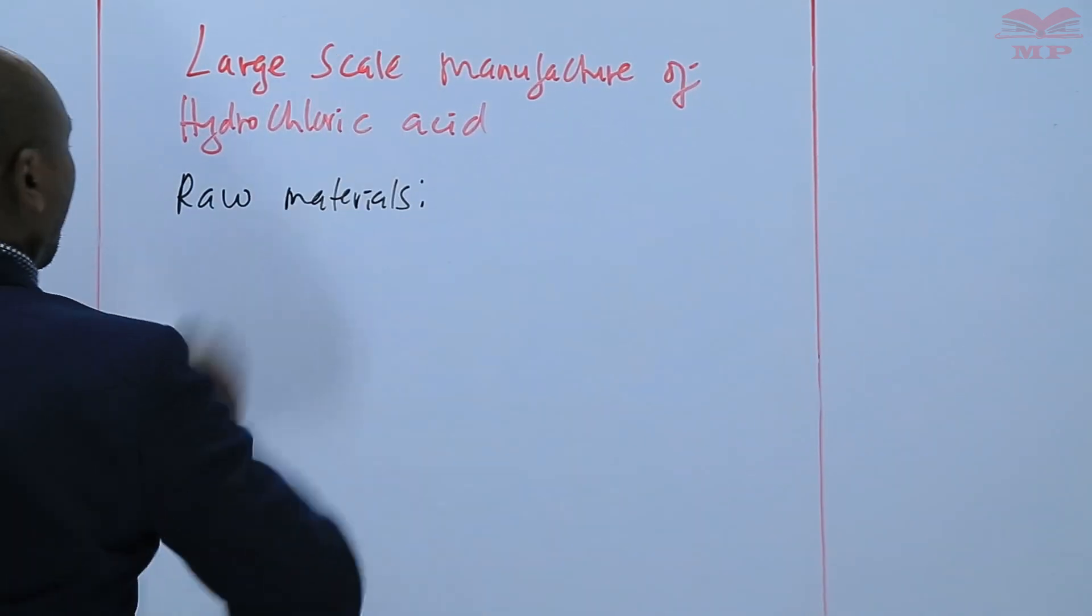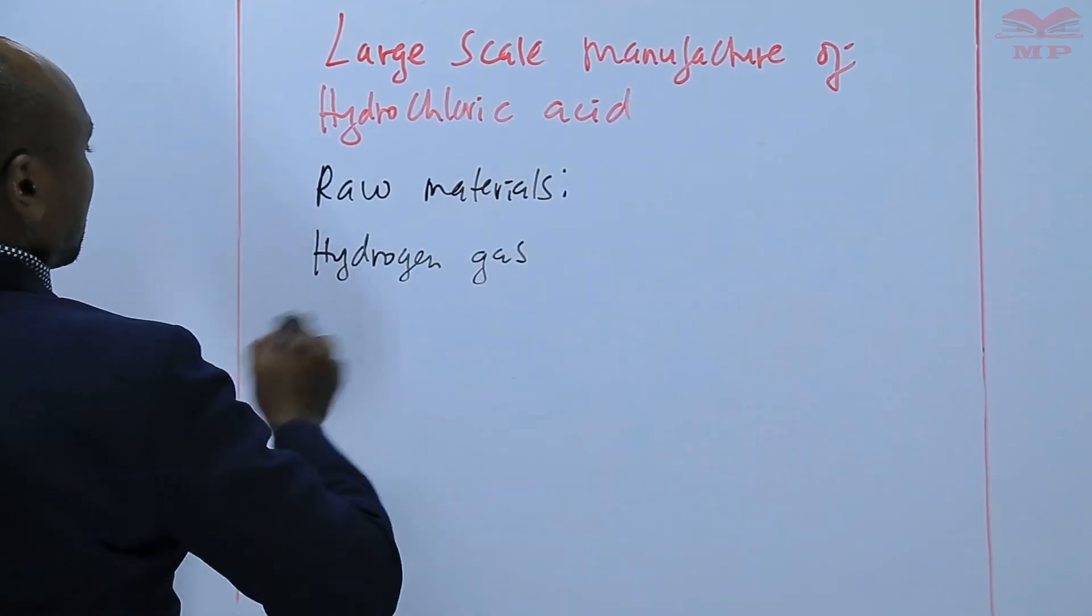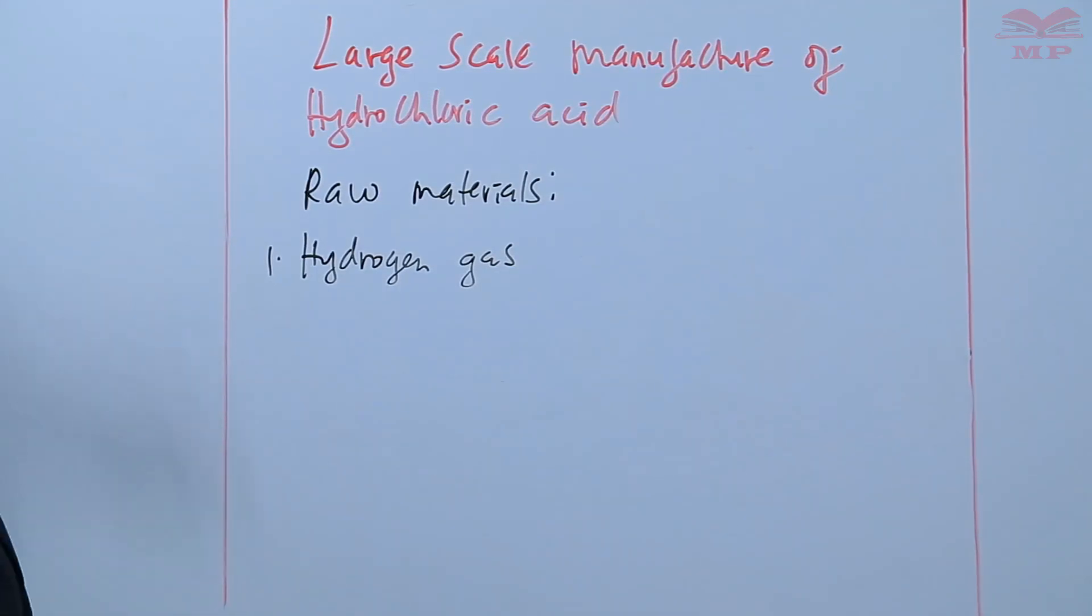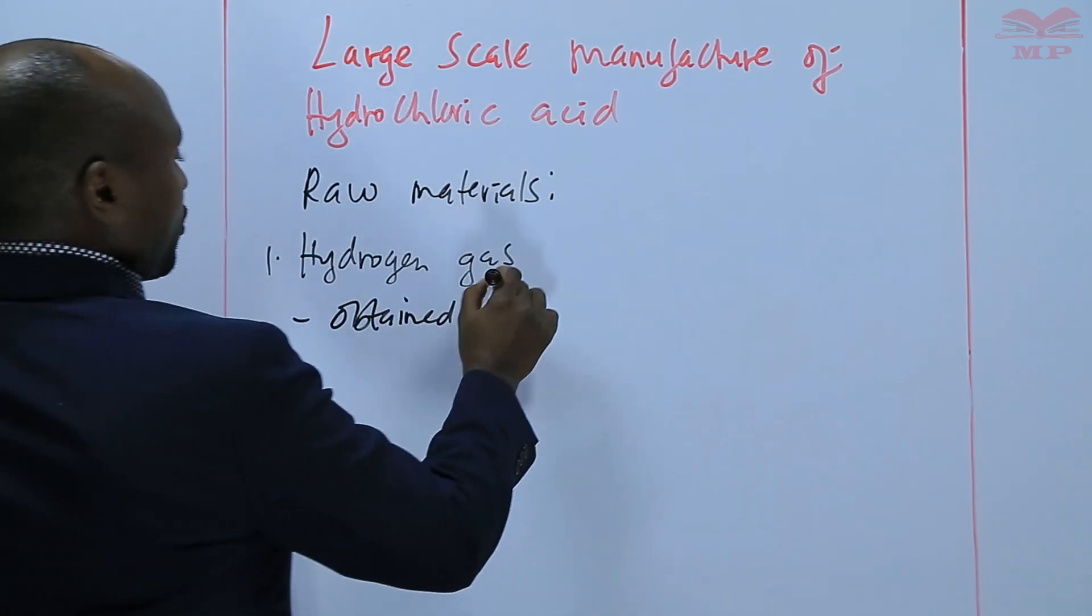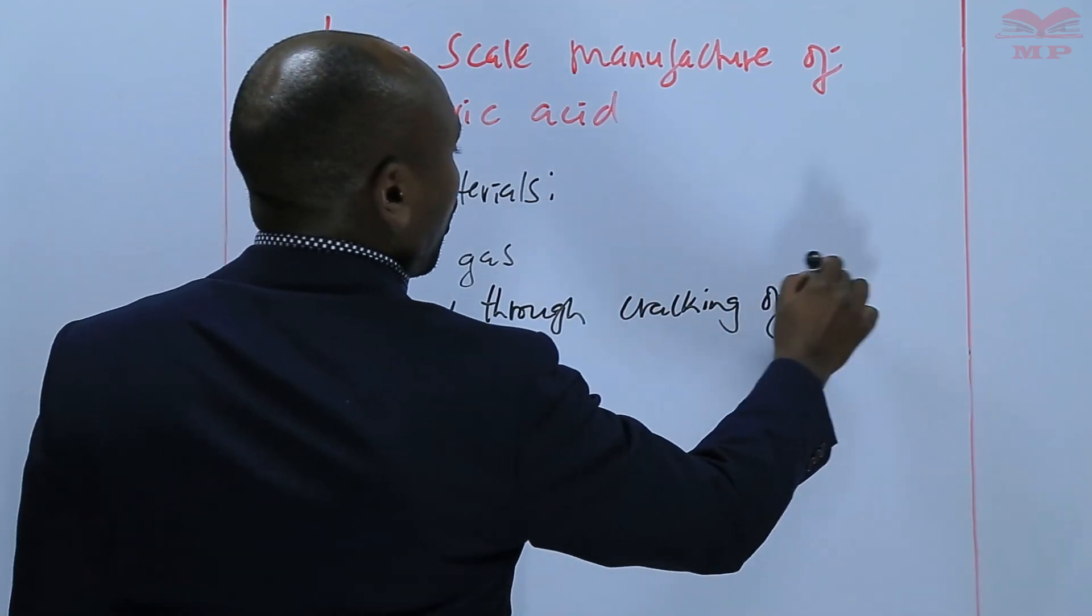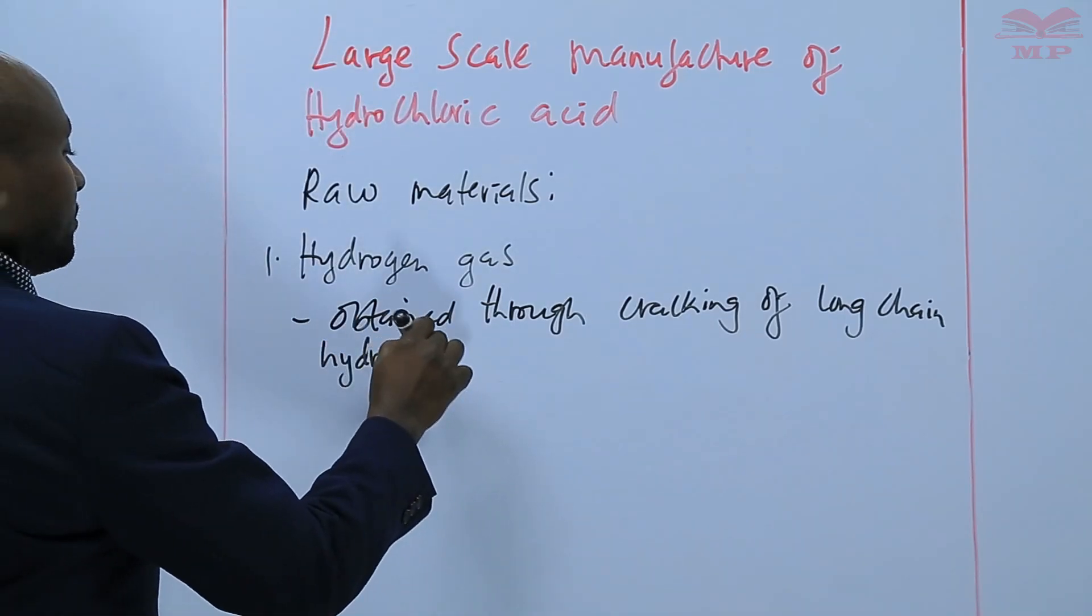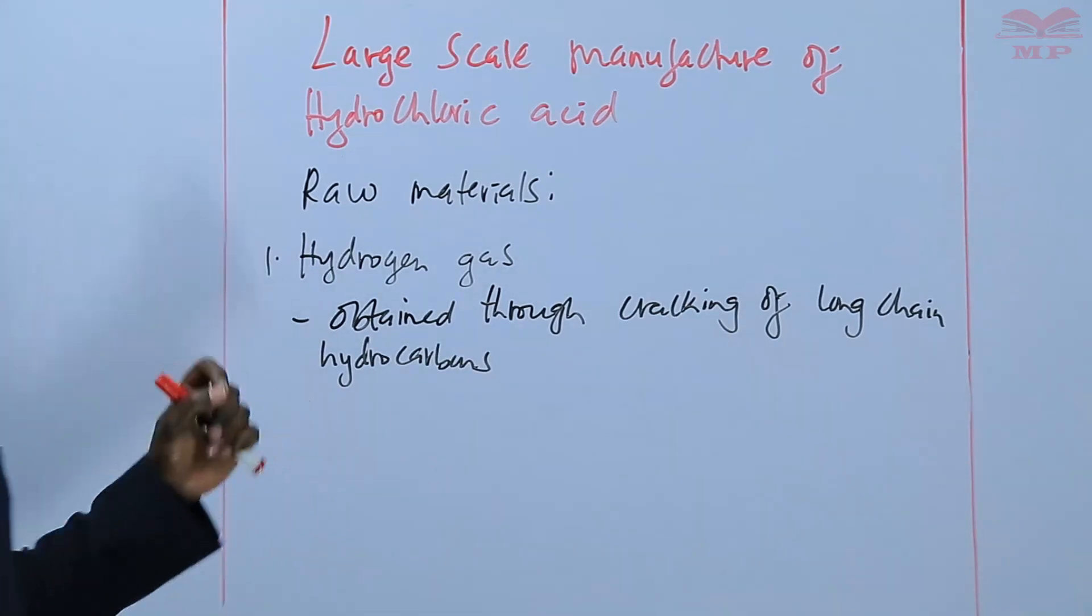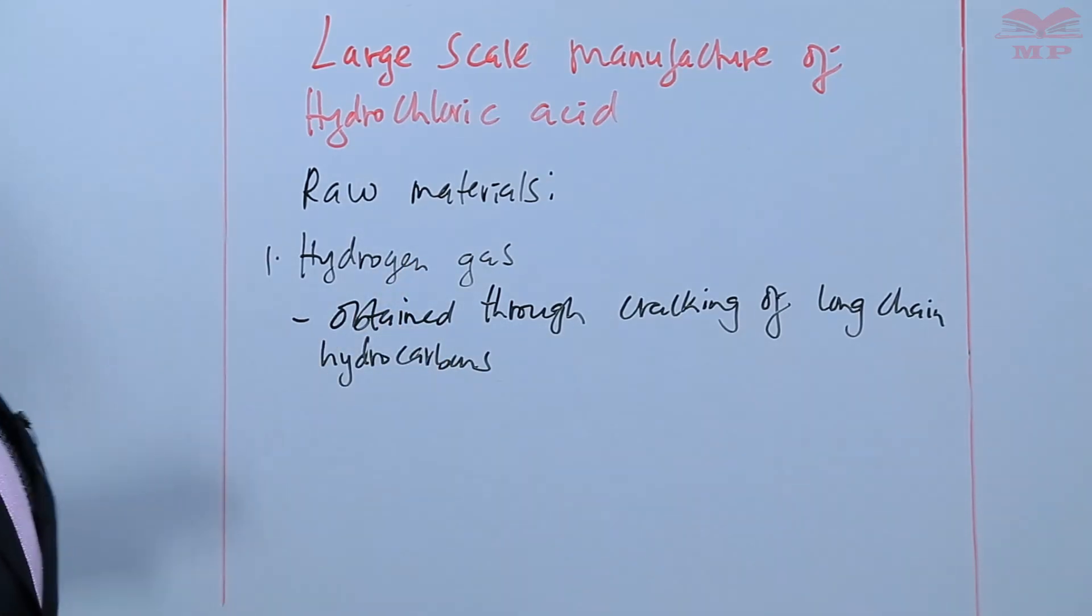The two raw materials are: we have hydrogen gas. And this hydrogen gas can be obtained by a number of ways. It can be obtained in large scale through cracking of long-chain hydrocarbons such as alkanes. Once alkanes are heated to a very high temperature, they crack or break down into small molecules, one of which is hydrogen gas.